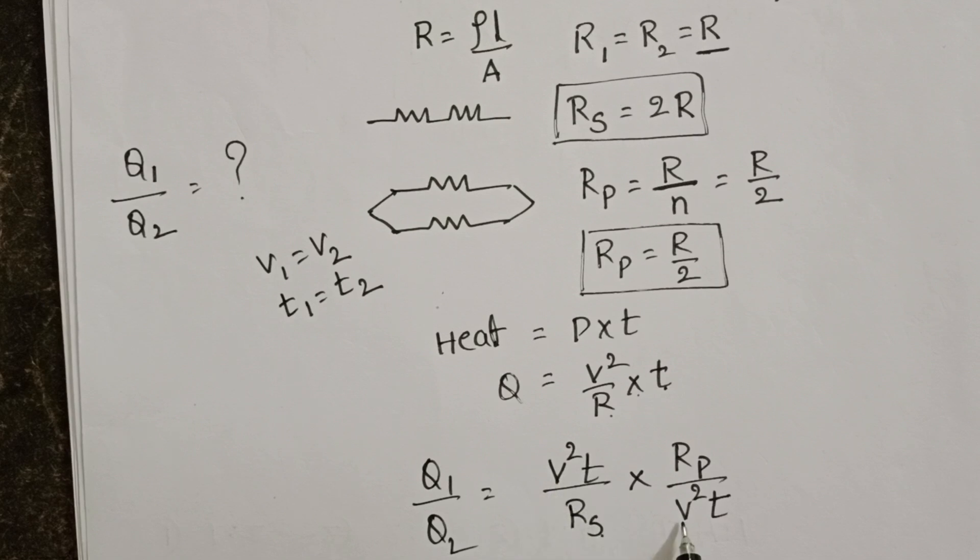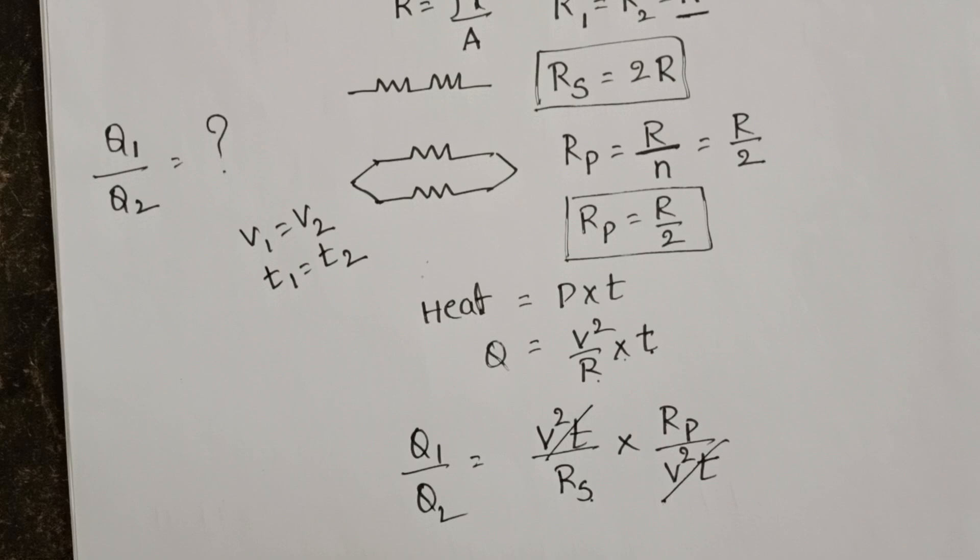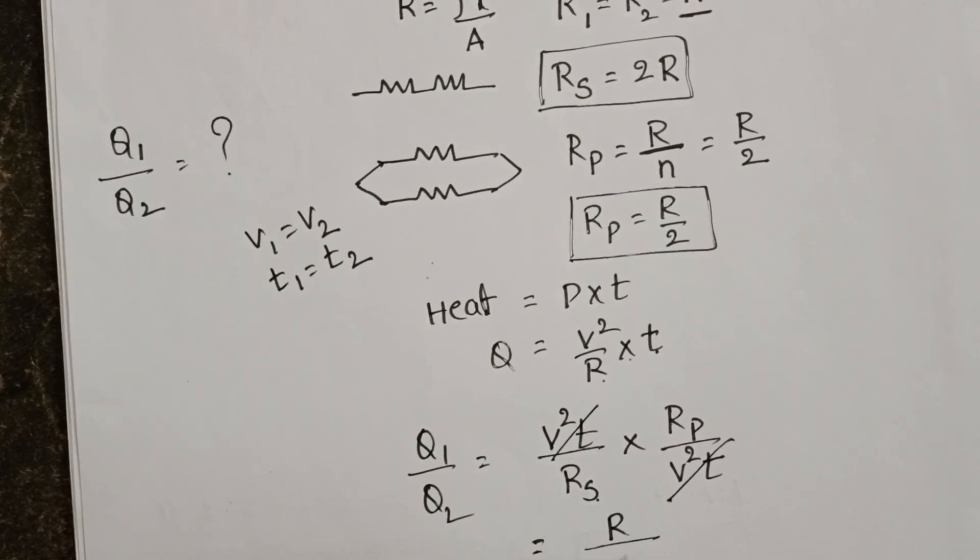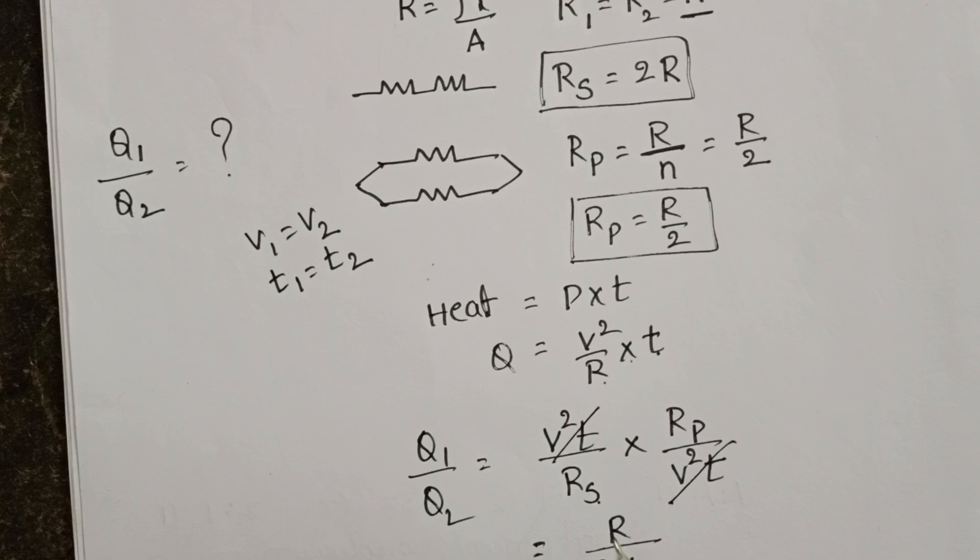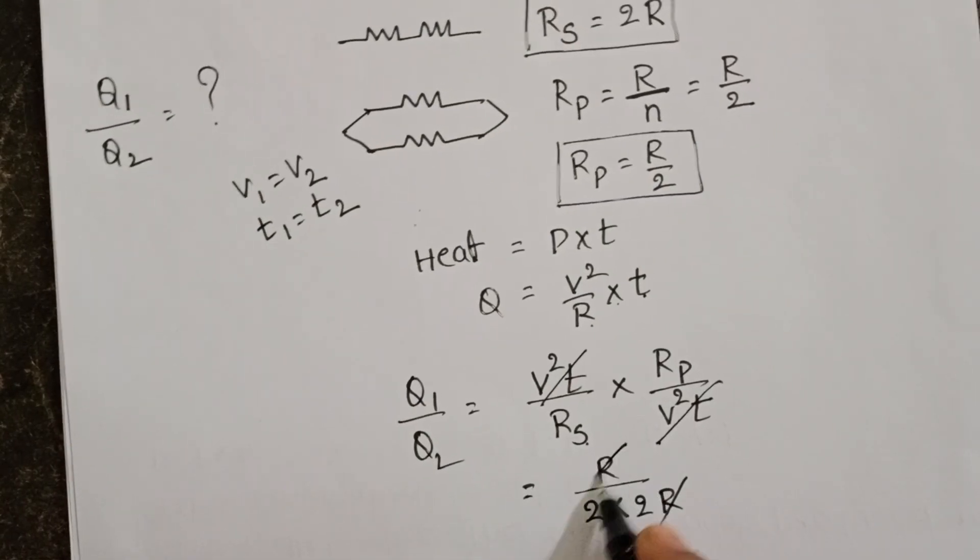Here both potential and time same. V square T, V square T get cancelled. Rp equals R by 2 and Rs equals 2R. R cancels.